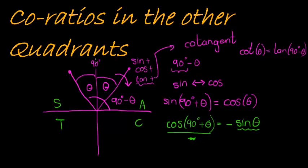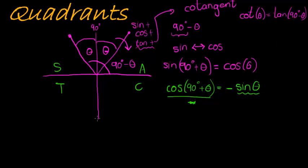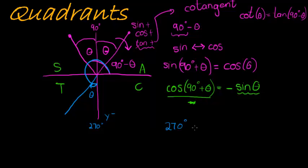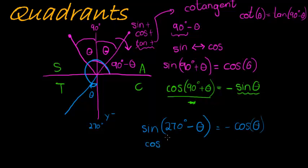In the third quadrant, we are not working with 90 degrees but with 270 degrees — the negative part of the y-axis. If theta is the angle made here, the observed angle is 270 degrees minus theta. In this quadrant, tan is the only positive ratio. So sine of 270 degrees minus theta gives negative cos, and since cos would be positive in the first quadrant, we multiply with a negative. Similarly, cos of 270 degrees minus theta equals negative sine of theta.